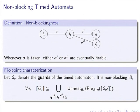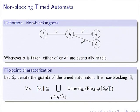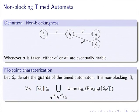Now let me show techniques used to compute these parameters. I'll consider non-blockingness: a timed automaton is non-blocking if whenever you take a transition and change location, you are able to take another transition eventually — every execution can be extended to an infinite execution. For timed automata, non-blockingness means the guard of edge sigma should be included in the time-predecessors of the next transitions. Pre-time is time predecessors and reset is a universal reset. If this holds for all edges, you have non-blockingness.